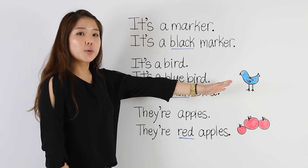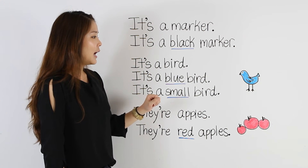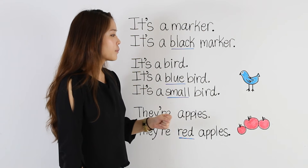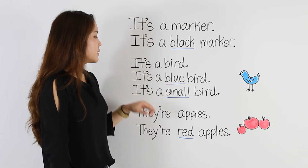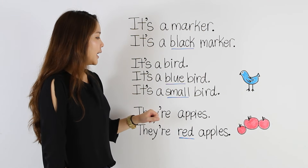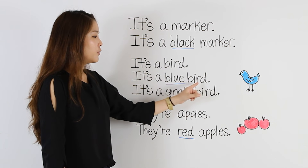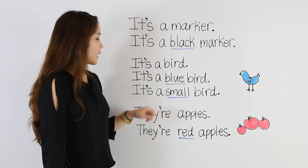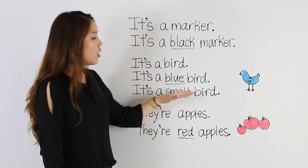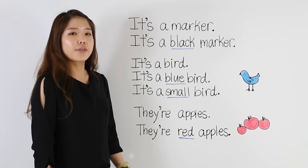Here we have a bird. It's a bird. I want to use an adjective to describe the color, so I'm going to say, it's a blue bird. Again, you have to put the adjective after the article and before the noun. I can also describe its size: it's a small bird. Small is another adjective.